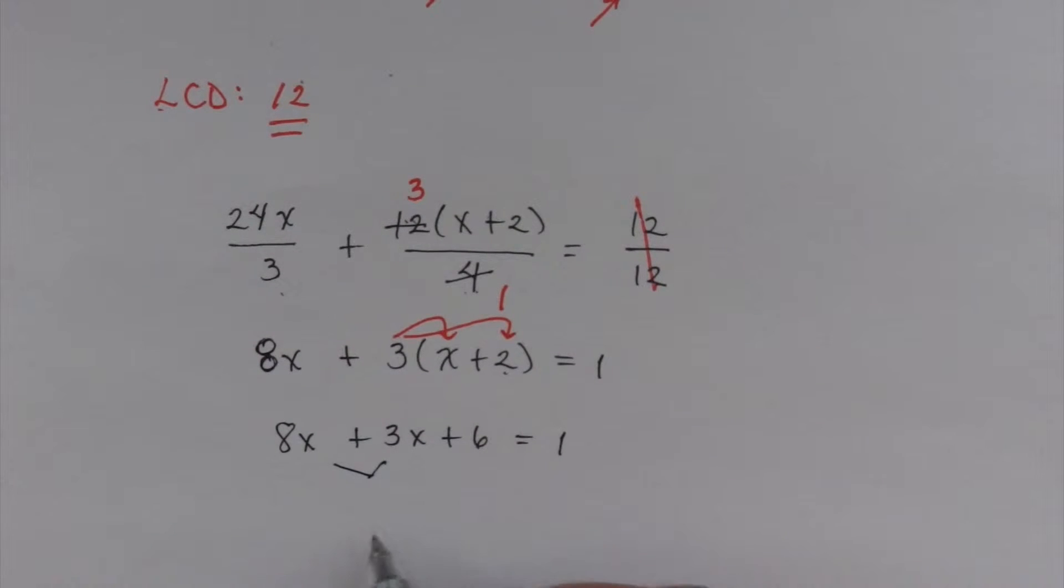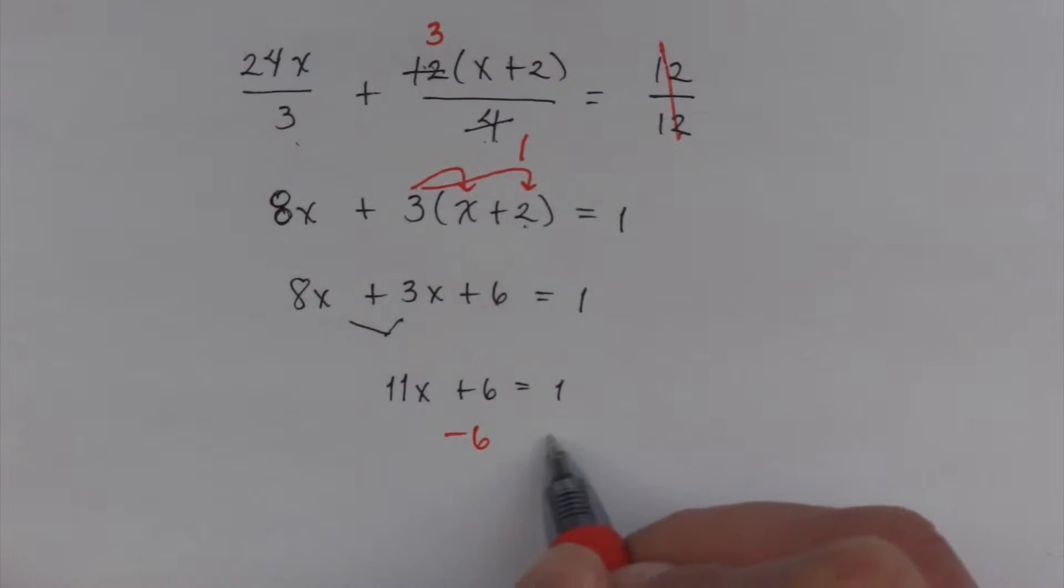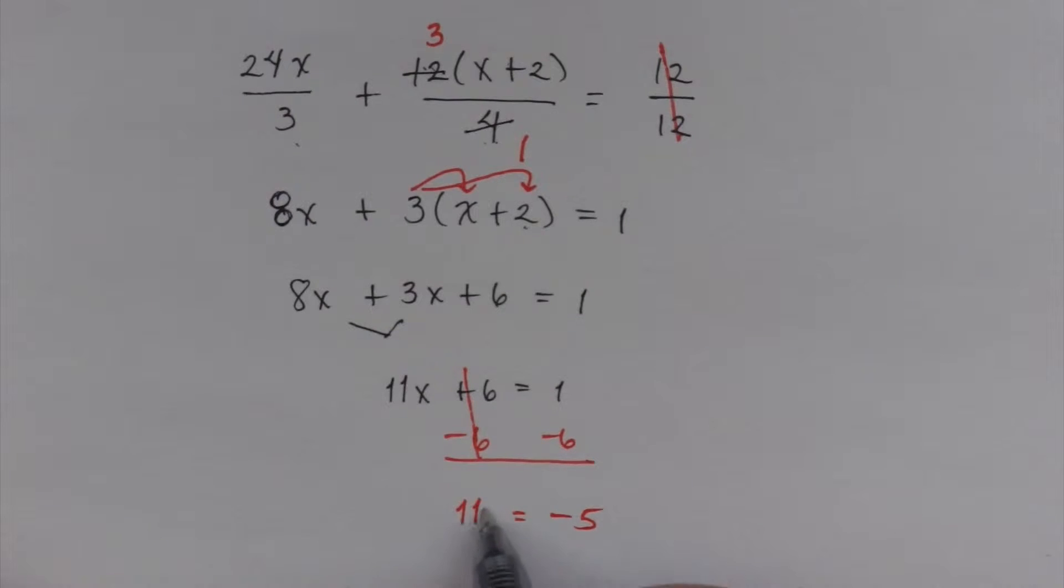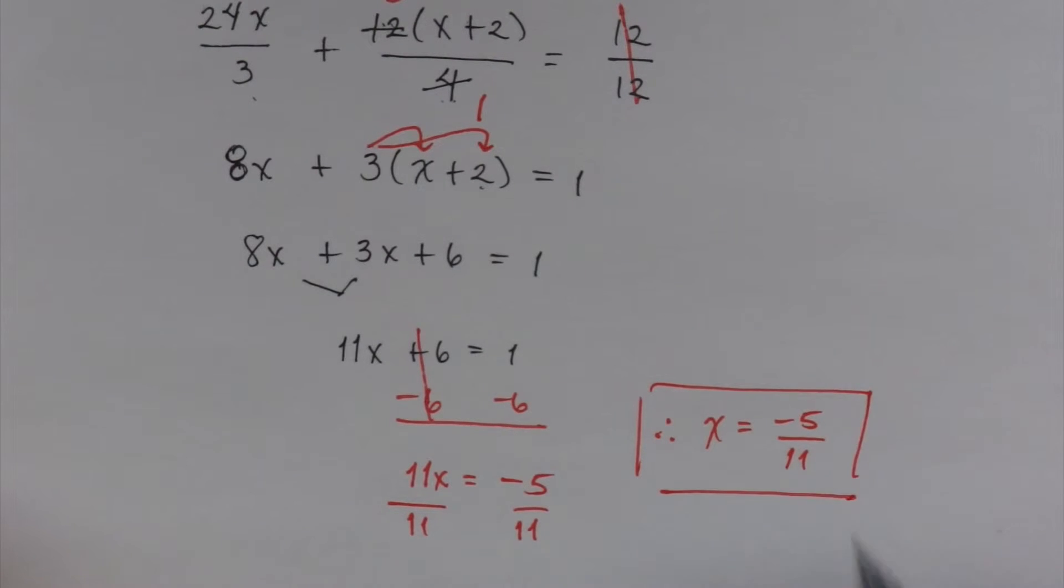I'm going to go ahead and combine like terms. That's going to give me 11x + 6 = 1. And as we solve this, minus 6 on both sides. Be careful, 1 - 6 is not 5, it is -5. Divide by 11. Therefore, x equals -5/11. And that would be your solution.